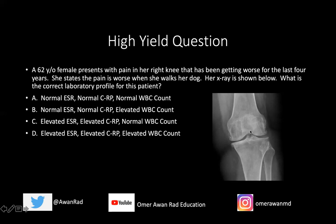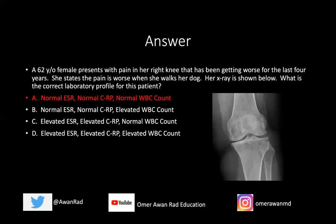The x-ray is characteristic of osteoarthritis. The medial femorotibial compartment is more involved — joint space loss, osteophytes — classic example of osteoarthritis. And of course, we know that all laboratory values are normal. There's no inflammation here, so normal ESR, normal CRP, normal white blood count.